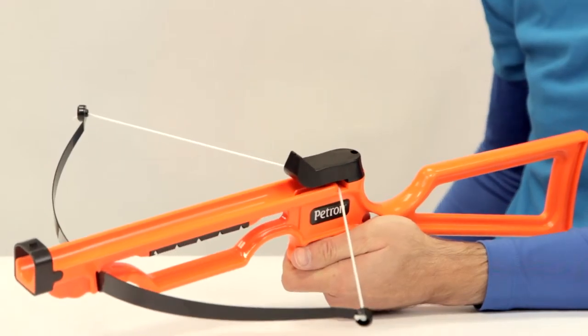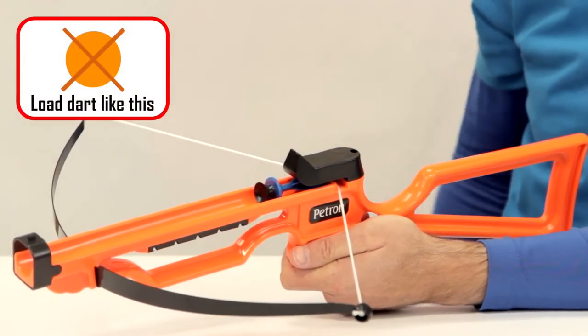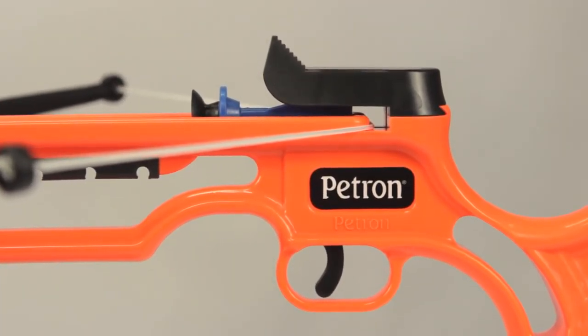We are now ready to load the bow. Insert a Petron sucker dart underneath the rear sight with the fins and the neck like this and push the dart fully back so the safety mechanism is released. The bow is now ready to shoot.